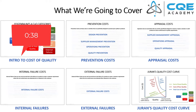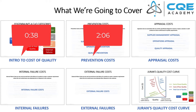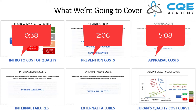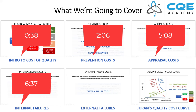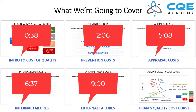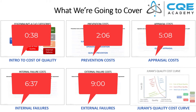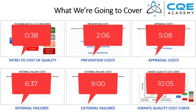Then we're going to talk through each of the four cost of quality categories: prevention, appraisal, internal failures, and external failures. In each of these four categories, we're going to talk about all of the activities that fall into these four buckets. Then we're going to wrap up with an explanation of Juran's quality cost curve.